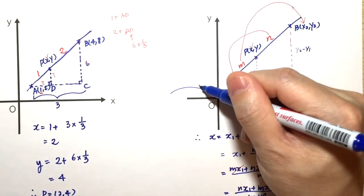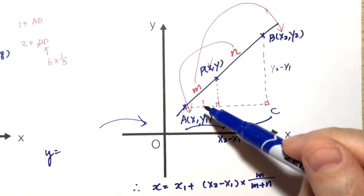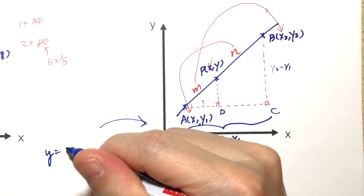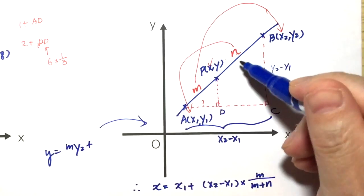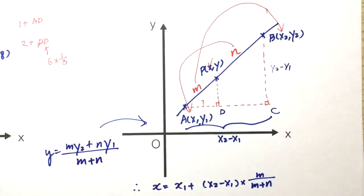Similarly, for y, it will be m times y2 plus n times y1, and the denominator will be m plus n.